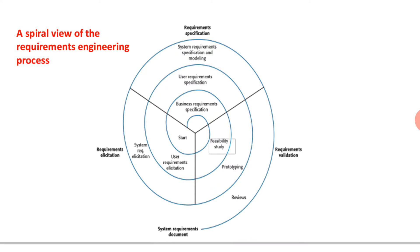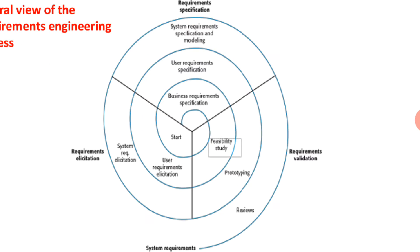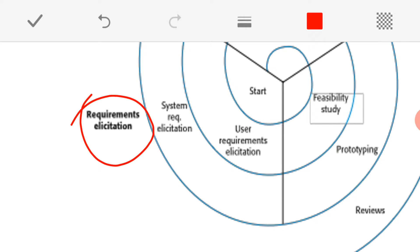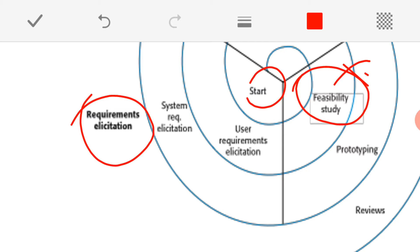This is the spiral model of the requirement engineering process. The very first activity is requirement elicitation, and the process starts in a particular looping way. In the very beginning, it always starts with the feasibility study — whether the software to be developed is feasible or not, with respect to the business perspective, market perspective, and profit towards the company. Every IT industry looks into this, and if it is positive, then only they will go ahead; otherwise they will drop that plan.